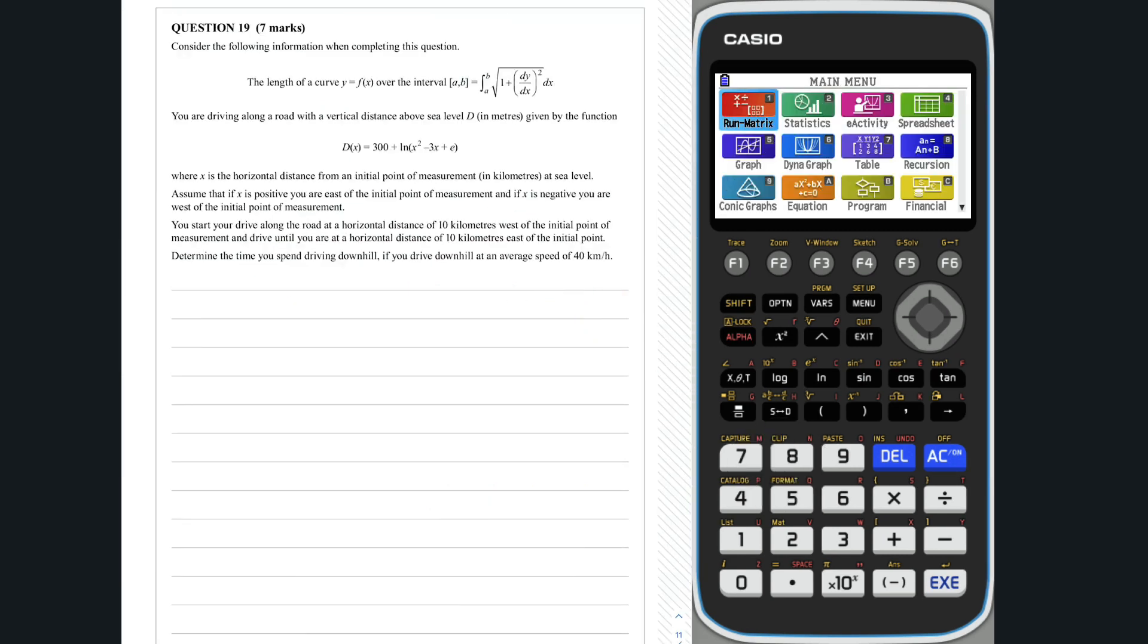Question 19. We are given some information about a drive we take and are asked to determine how much time we spend driving downhill. Given that speed equals distance over time and we are told that our average speed is 40 kilometers per hour, we will need to calculate how far we travel downhill. This is where the length of the curve formula will be useful. After reading all the information in the question, we can represent our drive on a Cartesian plane starting at the point negative 10 D of negative 10 and ending at 10 D of 10.